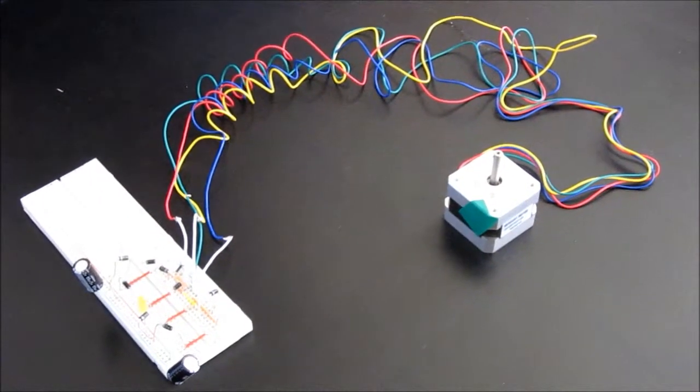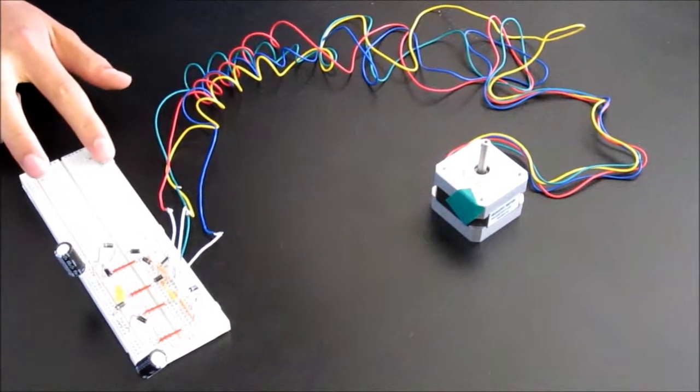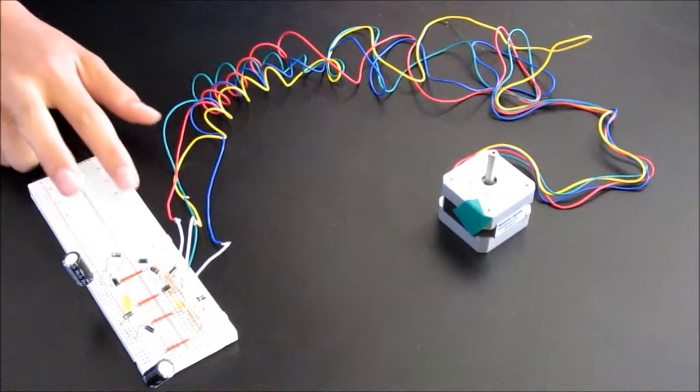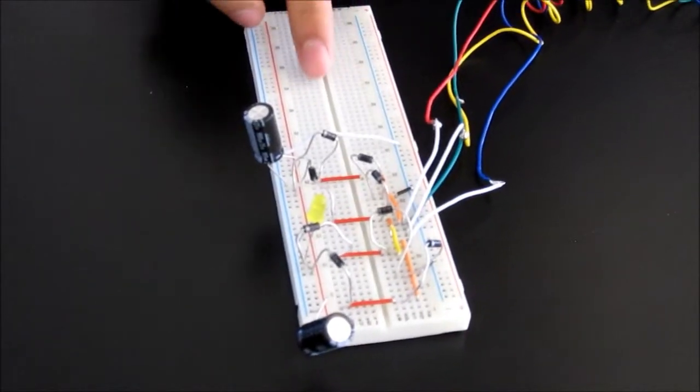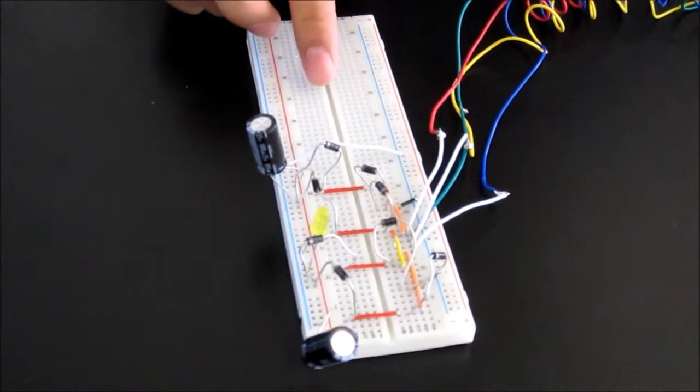So now I'll explain the rules of the breadboard. Basically at the sides with the positive and negative terminals, the vertical nodes are connected, while near the center, the horizontal nodes are connected. And the horizontal nodes are not connected across the gap.